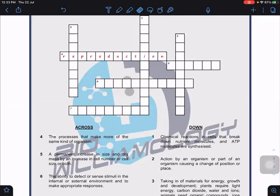Number five across: a permanent increase in size and dry mass by increasing cell number or size of cells, or both together. This must be growth.